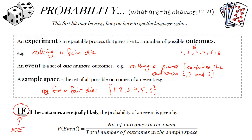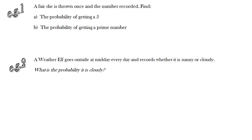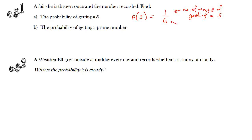We can use this formula: the probability of something happening equals the number of outcomes that correspond to that event divided by the total number of outcomes — but only if the outcomes are all equally likely. Example one: with a fair die, the probability of getting a five is one divided by six, since there's one way to get a five and six possible outcomes.